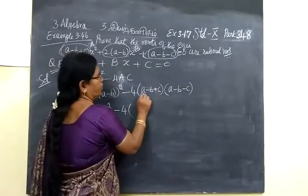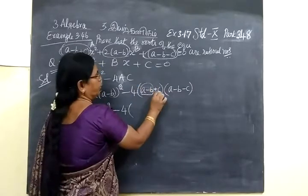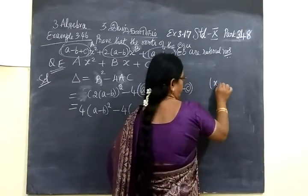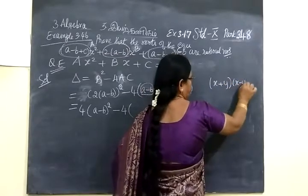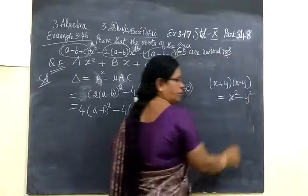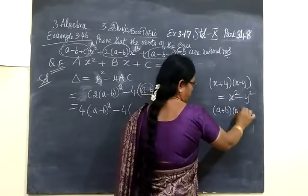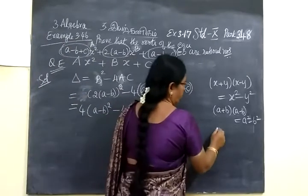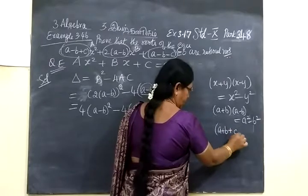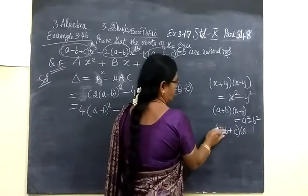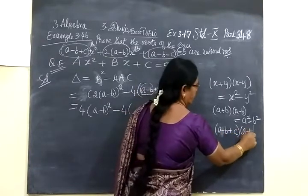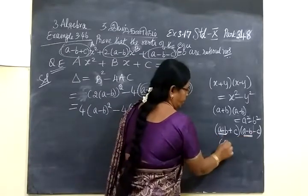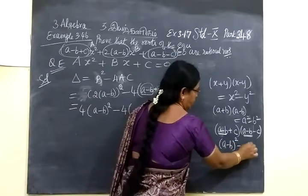This can be written as a complete order term. We know the identity: if S plus Y into S minus Y equals S square minus Y square. Here it is given A plus B plus C, then A minus B, then A minus B plus C, then A minus B minus C. If it is in this way — this is a complete order term — you can write A minus B whole square minus C square.